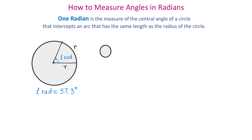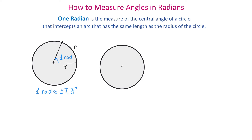Let's consider another circle. This circle also has the radius r. Along the circle, I will plot this distance r twice. Through this point, we will draw the terminal side of this angle. Then the measure of this angle will be two radians.